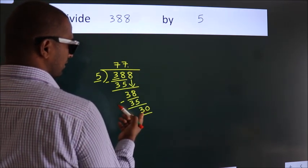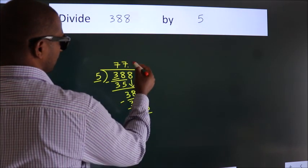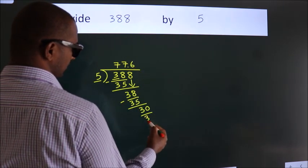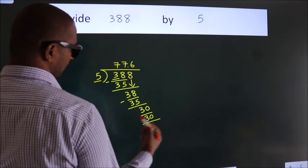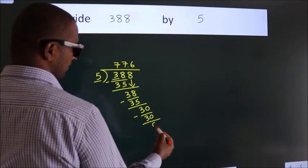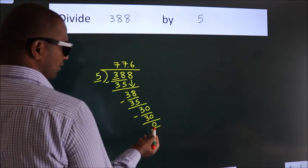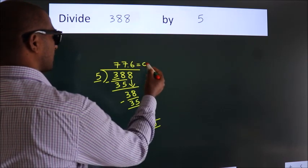When do we get 30 in the 5 table? 5 times 6 equals 30. Now we subtract. We get 0. We got remainder 0. So this is our quotient.